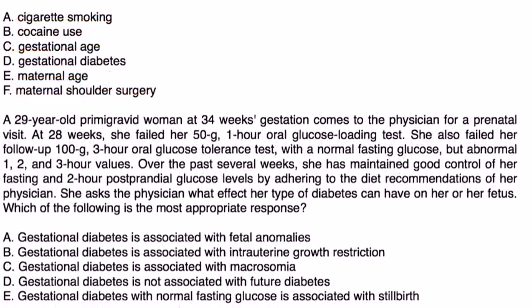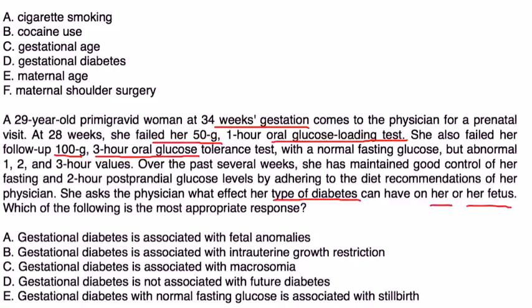A 29-year-old primigravid woman at 34 weeks gestation comes to the physician for a prenatal visit. At 28 weeks, she failed her 50-gram, 1-hour glucose tolerance test, and also failed her follow-up 100-gram, 3-hour glucose tolerance test, with a normal fasting glucose but abnormal 1-, 2-, and 3-hour values. Over the past several weeks, she has maintained good control of her glucose levels by adhering to her physician's diet recommendations. She asks what effect her type of diabetes can have on her or her fetus.